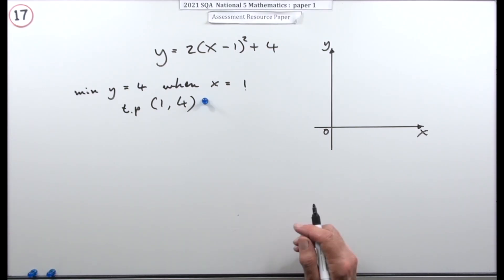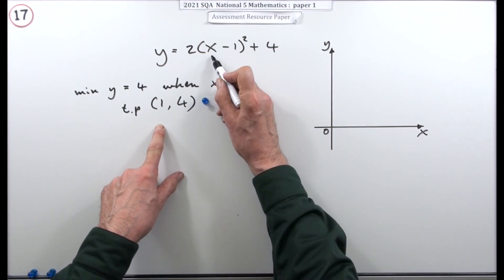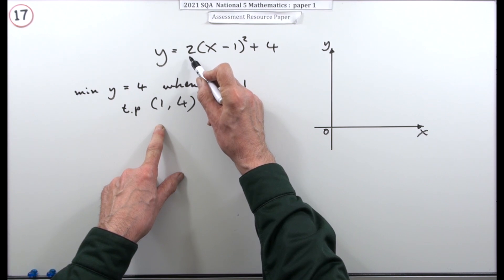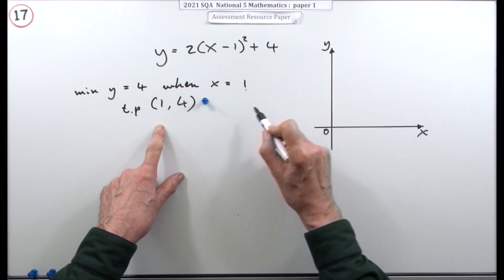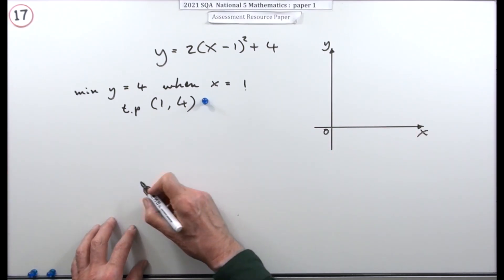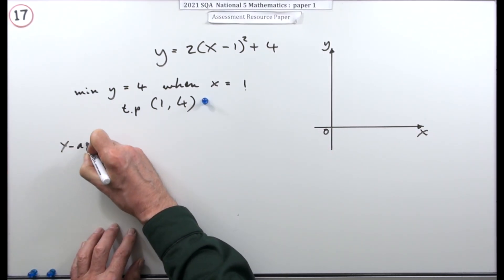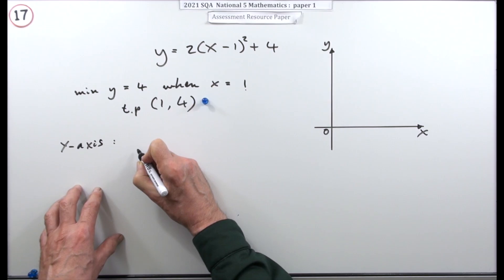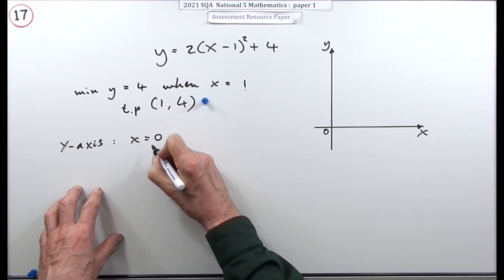Now where does it cut the axis? Well it's a positive x squared. Because that's a 2. An ordinary 2 at the front. So it's the right way round. So it means it can't cut the x axis. Because it can't get that low. So it's only going to cut the y axis. But I know where it cuts the y axis. It cuts the y axis when x is 0.